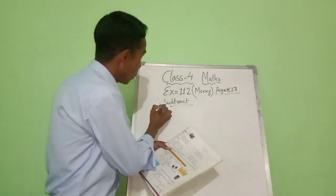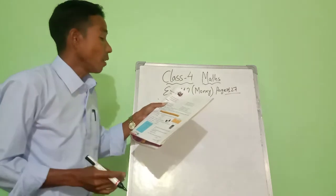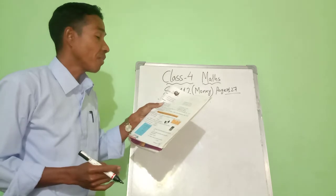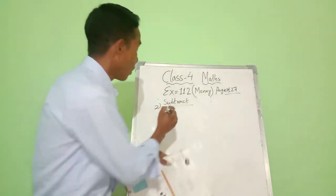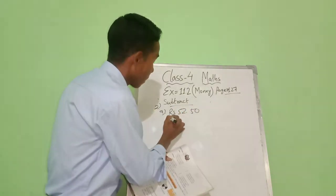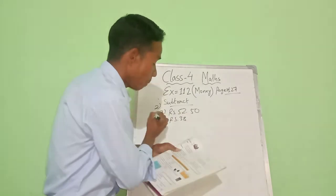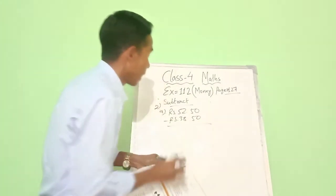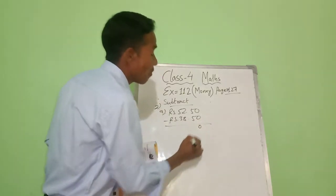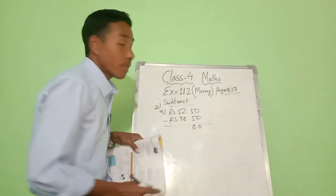Number two a: the question is to deduct rupees 38.55 from 52.55. We write 52.55 first, then we deduct 38.55. So zero from five is zero, then five minus five is zero.